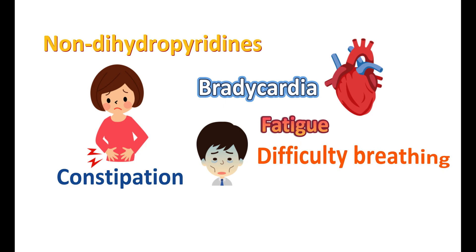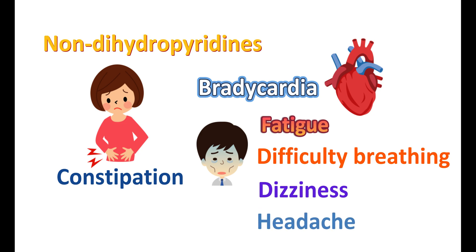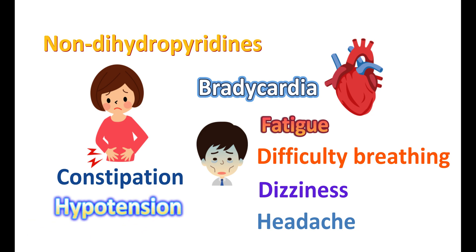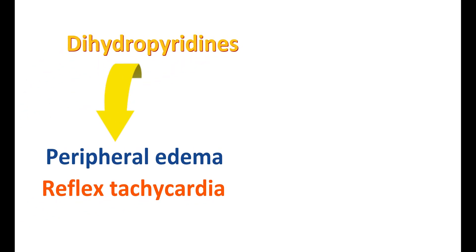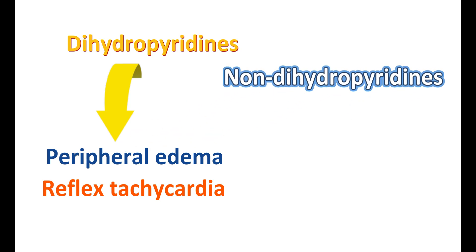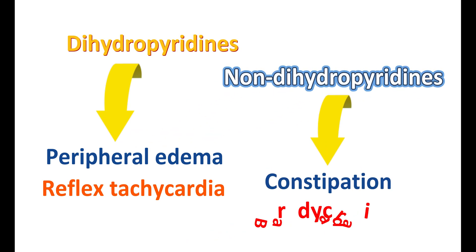Non-dihydropyridines can also cause difficulty breathing, dizziness, and headache. Since non-dihydropyridines reduce blood pressure, hypotension is another important side effect. In summary, dihydropyridines mainly produce peripheral edema and reflex tachycardia, whereas non-dihydropyridines mainly produce constipation and bradycardia.